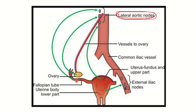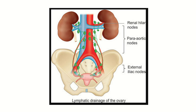Some parts of the fallopian tube and the fundus of the uterus also drain here. Though the ovary is a pelvic organ, its complete lymphatic drainage goes into the lateral aortic lymph node, or para-aortic lymph node. This point is very important — though it is a pelvic organ, it drains its lymphatics into the para-aortic lymph node.